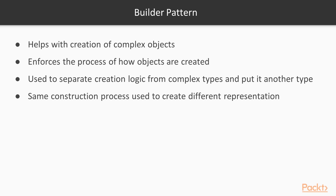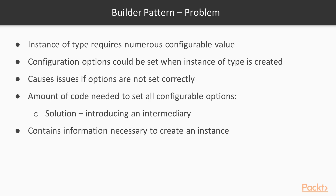Let's begin with the builder design pattern. The builder pattern helps with the creation of complex objects and enforces the process of how these objects are created. It is generally used to separate the creation logic from the complex type and put it in another type, using the same construction process to create different representations. The problem that the builder pattern is designed to address is when an instance of a type requires numerous configurable values. The configuration options could be set when an instance is created, but that can cause issues if the options are not set correctly or the proper values for all options are unknown. Another issue is the amount of code needed to set all the configurable options each time an instance is created. The builder pattern solves this by introducing an intermediary known as a builder type, which contains the information necessary to create an instance of the original complex type.